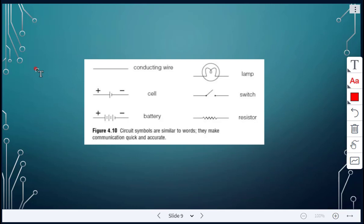All right, these are some symbols, circuit symbols, that you guys need to be aware of. Their circuit symbols are similar to words. They make communication quick and accurate. So a straight line like this, that represents a conducting wire. This is a cell. And then as we add on more cells, it becomes a battery. You have the positive end and the negative end. Same here, you have the positive end and the negative end of the battery. This symbol represents a lamp. This represents a switch. And this represents a resistor.